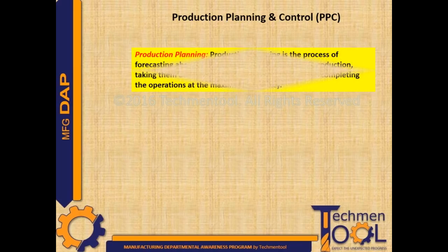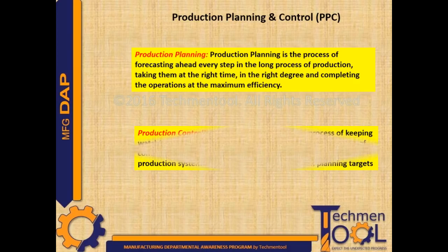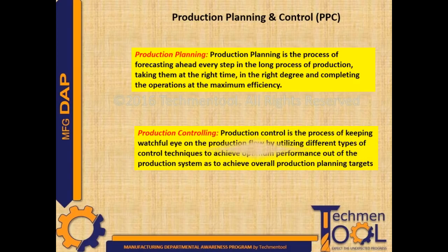Production planning and control, or PPC, is a combination of two processes: production planning and production control. Production planning is the process of forecasting ahead every step in the long process of production, taking them at the right time, in the right degree, and completing the operations at maximum efficiency.